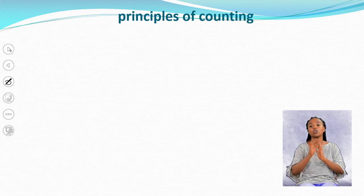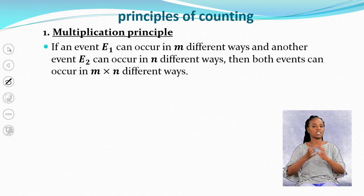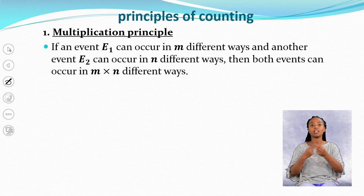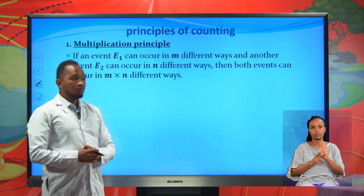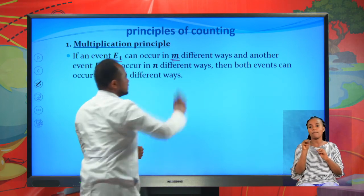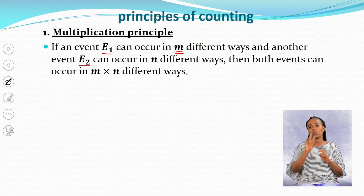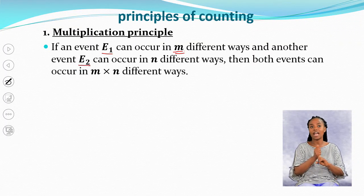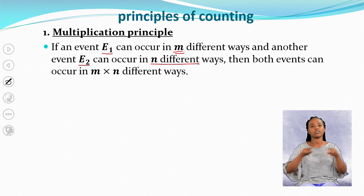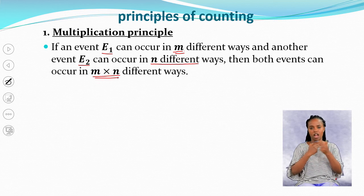To evaluate probability, we count. We need to have a counting principle for complex cases. The first counting principle is the multiplication principle: if an event E1 occurs in M different ways and another event E2 occurs in N different ways, then both events together occur simultaneously in M times N different ways.